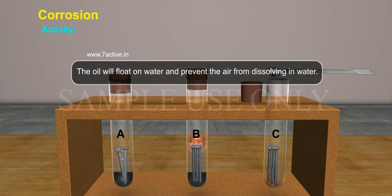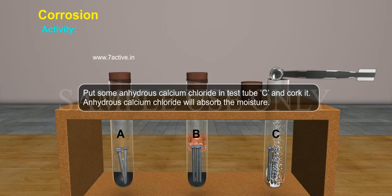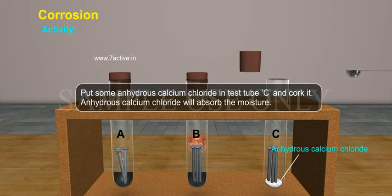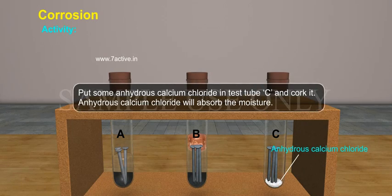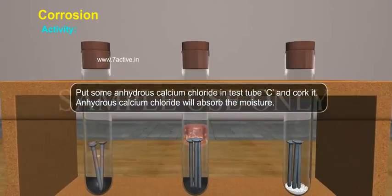The oil will float on water and prevent the air from dissolving in water. Put some anhydrous calcium chloride in test tube C and cork it.